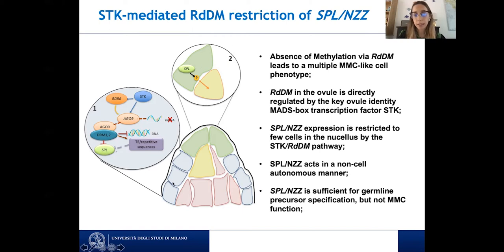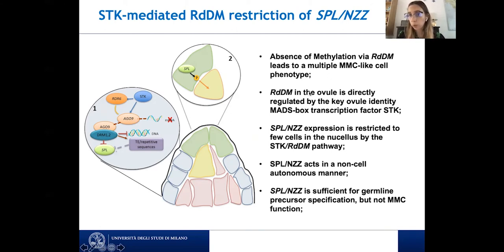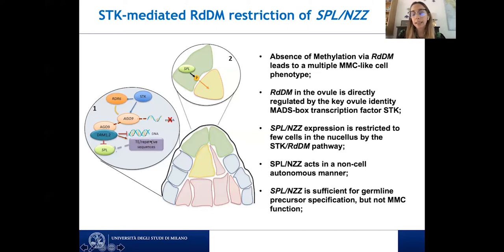In our mutants, SPL is also expressed in those cells, and instead of having only one, we have more than one enlarged cell. The major conclusions of our work are: absence of methylation leads to multiple MMC-like enlarged cells; Seedstick directly controls two members of the RdDM pathway; SPOROCYTELESS expression is confined to the L1 layer; SPOROCYTELESS acts in a non-cell-autonomous manner since it is not expressed in the MMC; and SPOROCYTELESS is sufficient for MMC precursor formation but not for function.